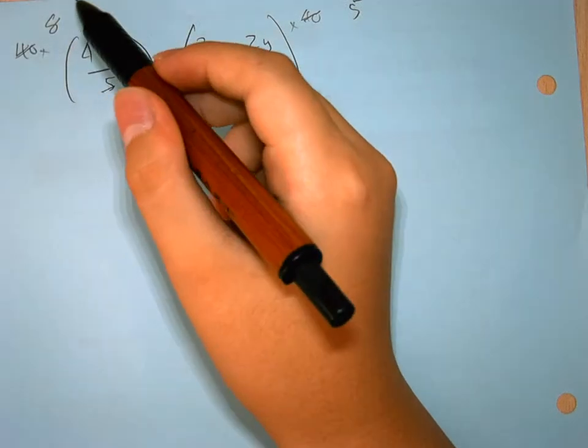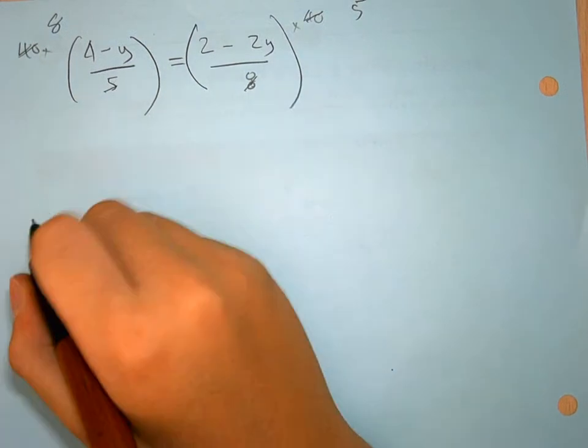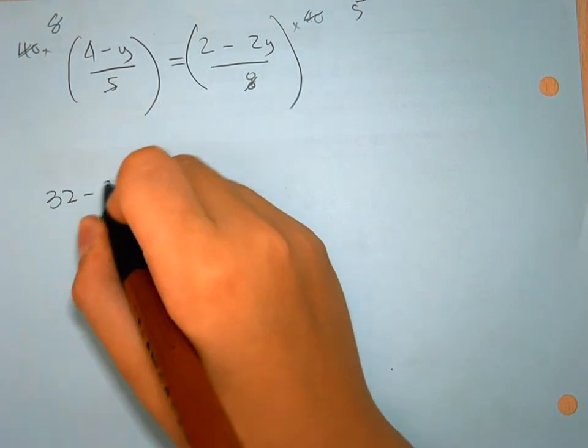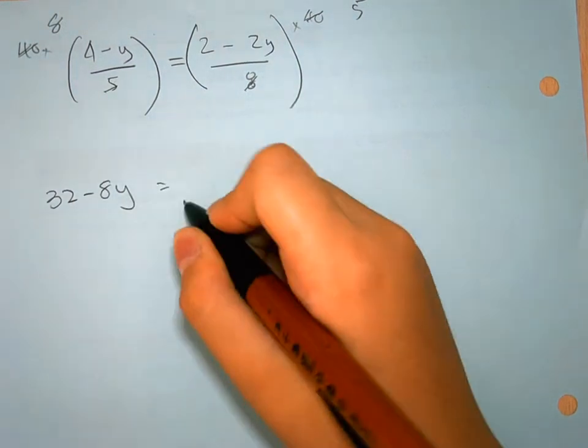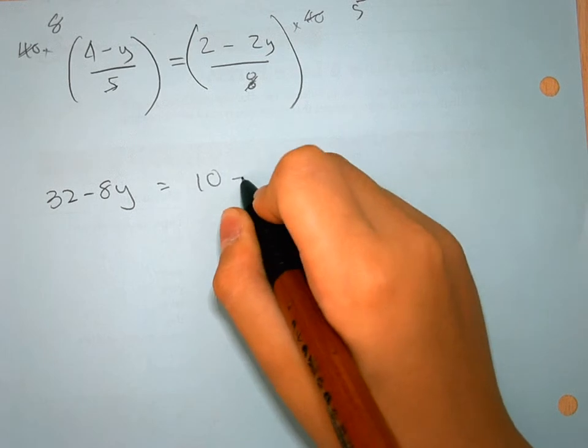Therefore, it becomes 32 minus 8y equals 10 minus 10y.